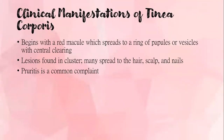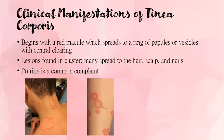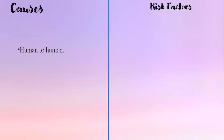The clinical manifestations of tinea corporis begin with a red macule which spreads to a ring of papules or vesicles with central clearing. Lesions are found in clusters and may spread to the hair, scalp, and nails. Pruritus is a common complaint. Causes include human-to-human transmission, because ringworm often spreads by direct skin-to-skin contact with an infected person.